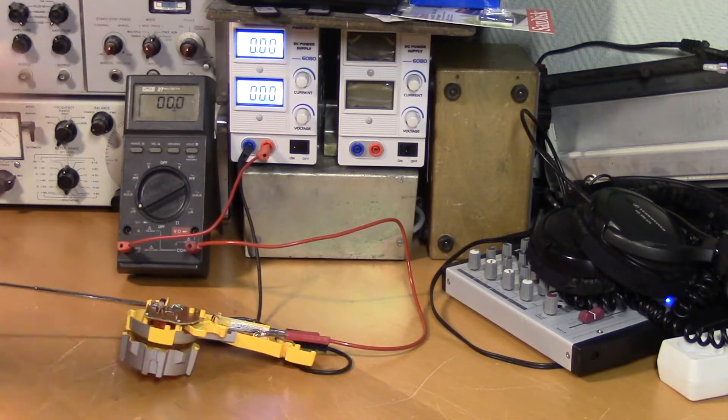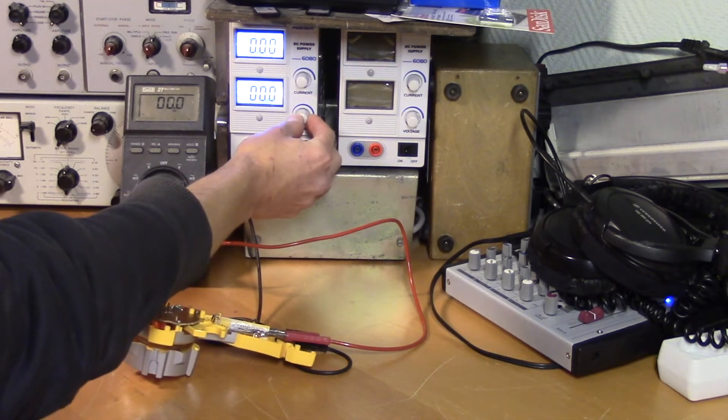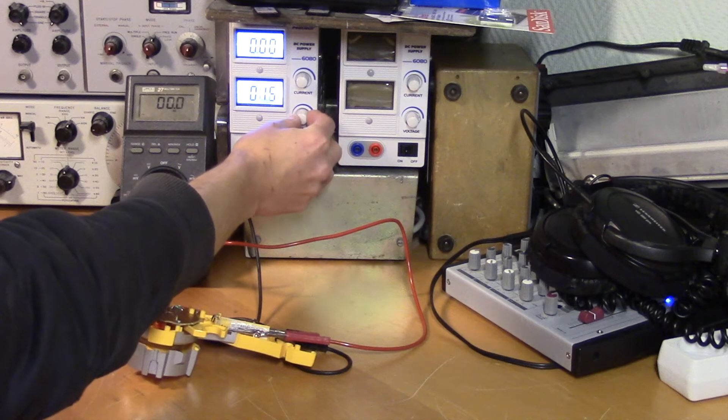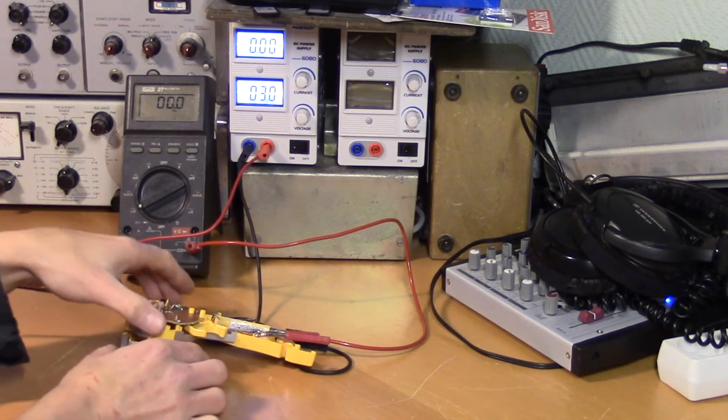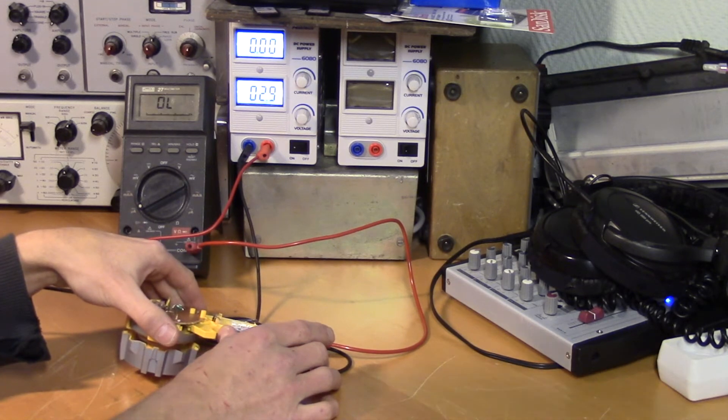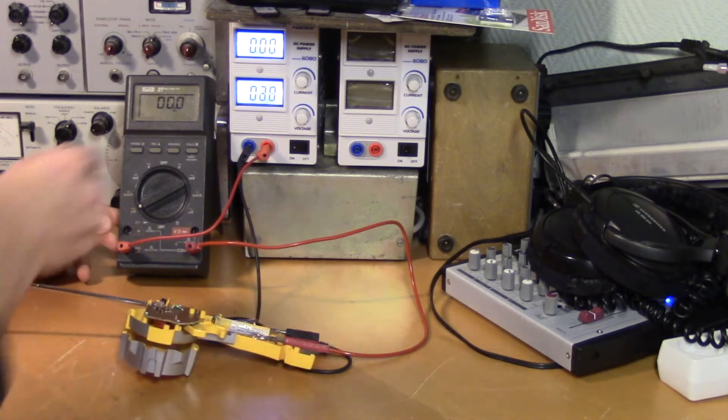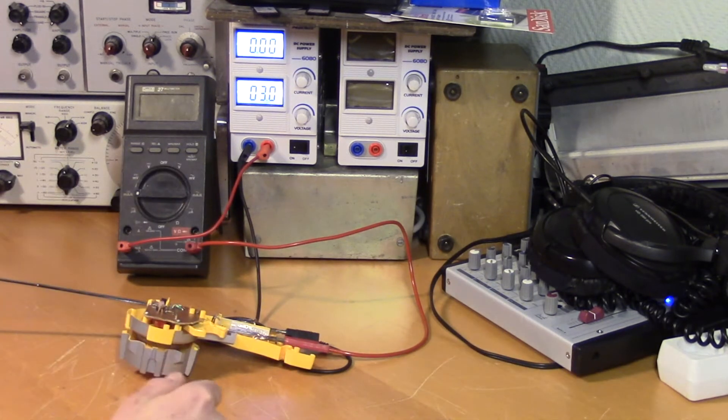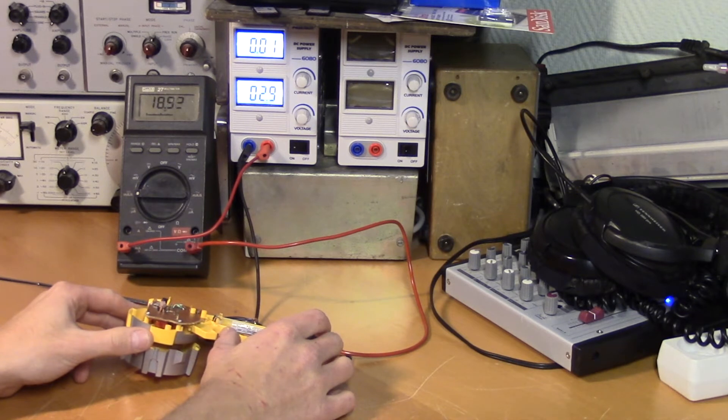So now we'll monitor the current as I'm turning up the voltage to 3 volts. No current draw yet. Let's see what happens if we toggle some switch. Yep, we're definitely drawing current there. Let's switch it to milliamps. Let's do it again. Okay, so we're drawing about 20 milliamps.